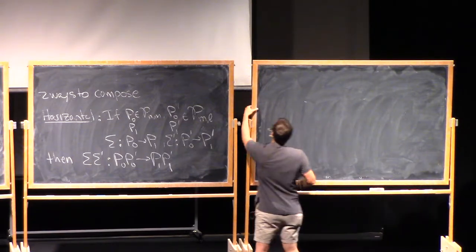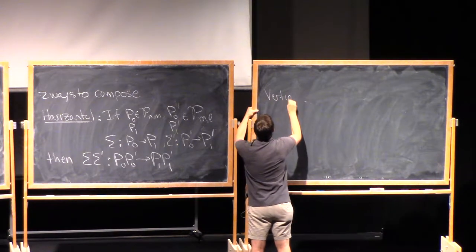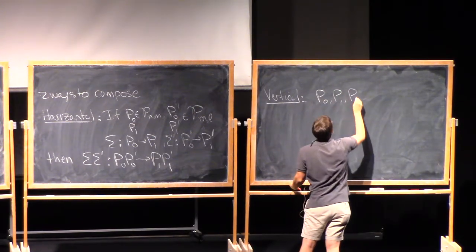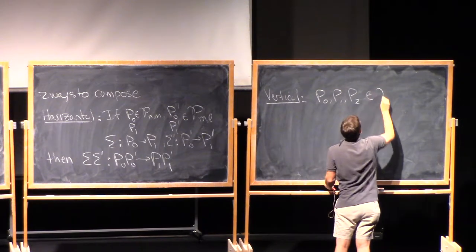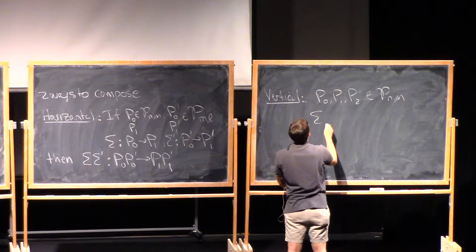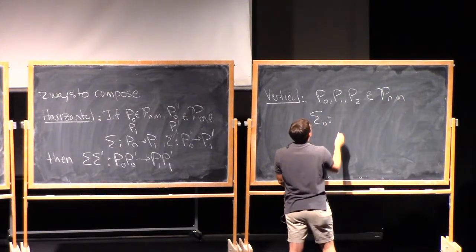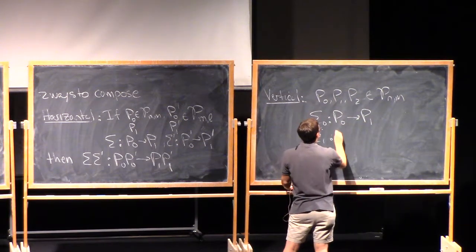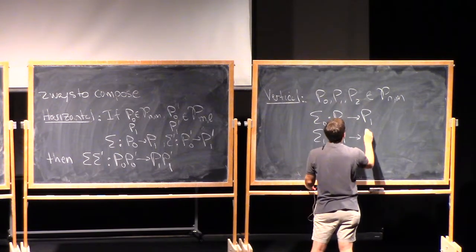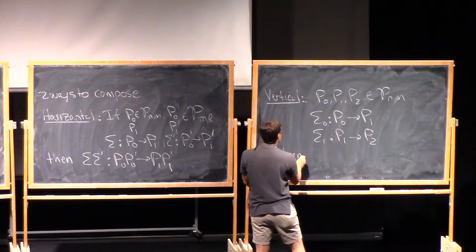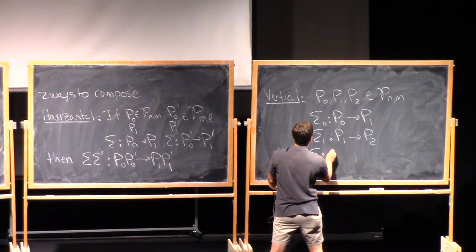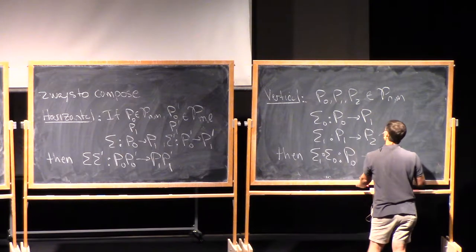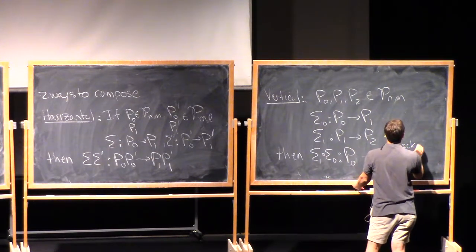I also have vertical composition. If P0, P1, and P2 are all in PNM, and I give you sigma nought from P0 to P1, sigma 1 from P1 to P2, then I can stack in the T direction and get sigma 1 composed with sigma nought, a cobordism from P0 to P2.